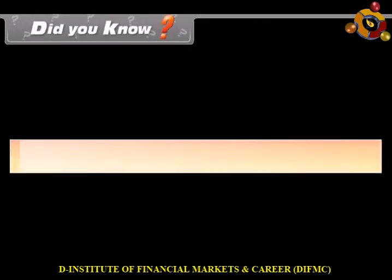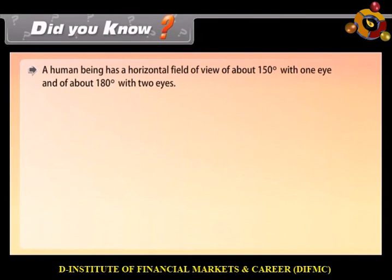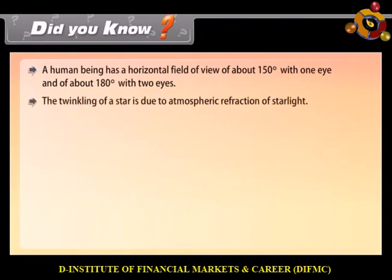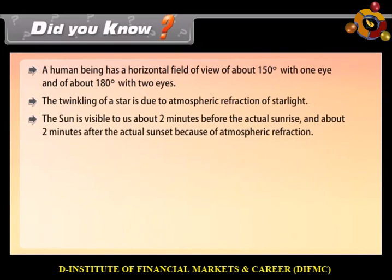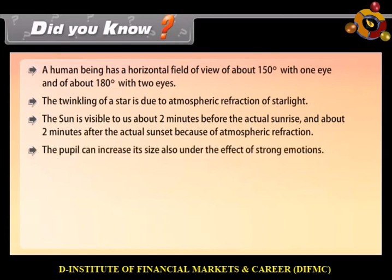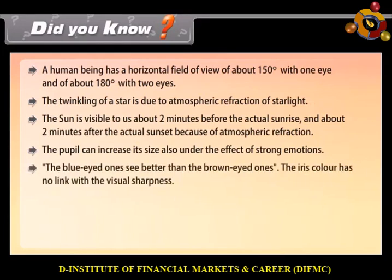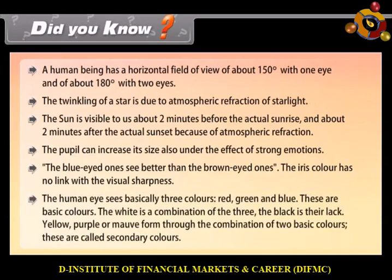Did you know? A human being has a horizontal field of view of about 150 degrees with one eye and about 180 degrees with two eyes. The twinkling of a star is due to atmospheric refraction of starlight. The sun is visible about two minutes before actual sunrise and two minutes after actual sunset because of atmospheric refraction. The pupil can also increase its size under the effect of strong emotions. The iris color has no link with visual sharpness. The human eye sees basically three colors — red, green, and blue. These are the basic colors. White is a combination of the three; black is their absence. Yellow, purple, and mauve form through the combination of two basic colors and are called secondary colors.